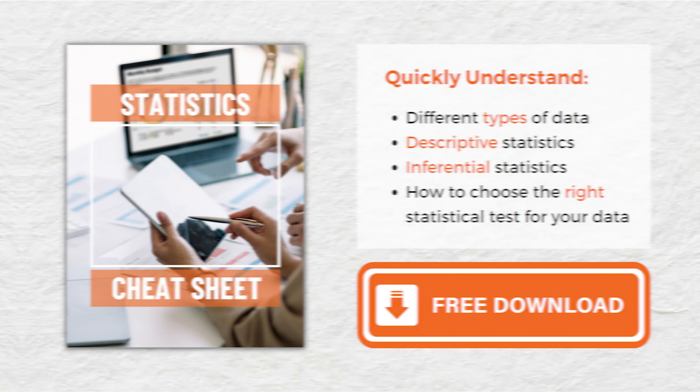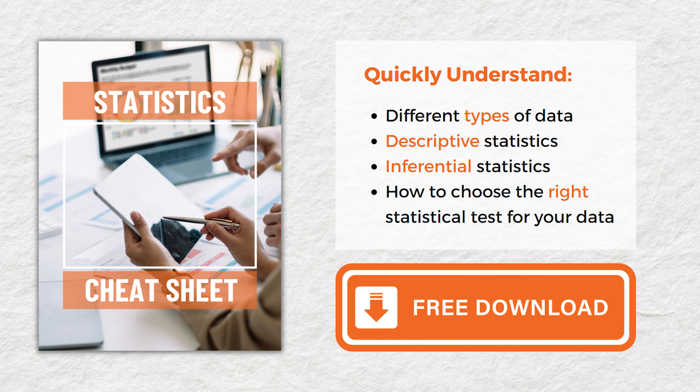It's worth pointing out that in these examples we're specifically referring to what's called a one-way ANOVA. There are multiple types of ANOVAs for different applications, and you need to select the right one or your data will be pretty meaningless. Thankfully, our free statistics cheat sheet makes this task really quick and easy, so be sure to grab a copy using the link in the description.